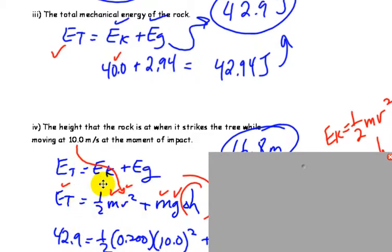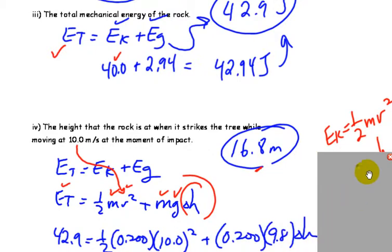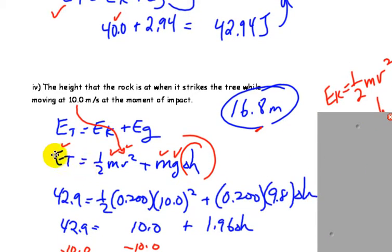We have to break it down though, because we don't know the kinetic energy when it's going 10 meters per second. So we break the kinetic energy equation down to one-half mv squared. Of course, we're looking for height, so the EG equation, we break down to mgh, and then we just simply substitute everything in. Total energy is what it was up here, 42.9.